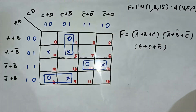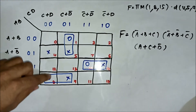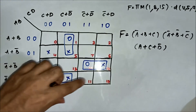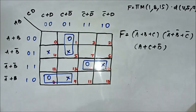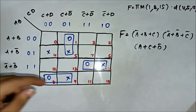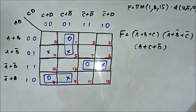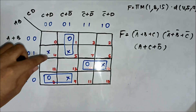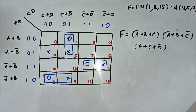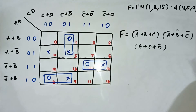As you can see, the X-mark cells (don't care cells) are helping in group formations along with the 0-mark cells (max term values). However, it is not necessary to group all the X-mark cells.